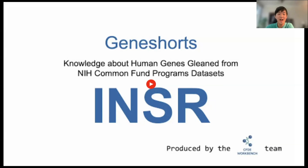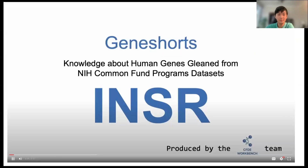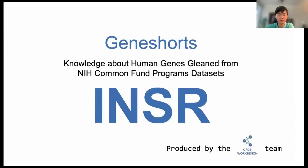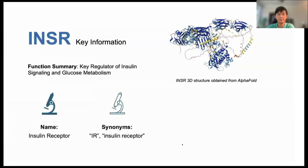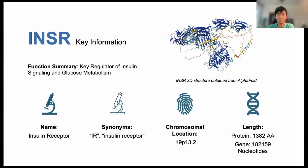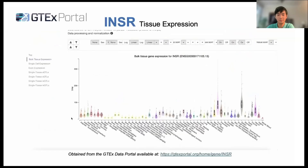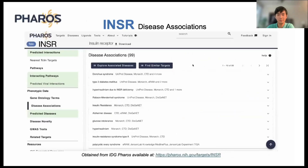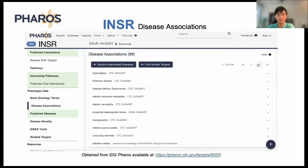Here is a sample video for the gene INSR, or insulin receptor. Welcome to GeneShorts. In this short video, we present knowledge available from various NIH Common Fund programs about the human gene INSR. The INSR gene, also known as insulin receptor or IR, is a key regulator of insulin signaling and glucose metabolism. It is located on chromosome 19, with a protein coding length of 1,382 amino acids and a gene length of 182,159 nucleotides. Based on median tissue expression provided on the GTEx portal, INSR is highly expressed in the spleen and ovary. INSR is associated with Donohue syndrome and Alzheimer's disease based on information aggregated from other sources to create the IDG-FEROS database.